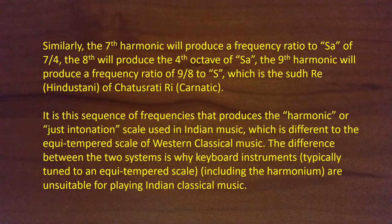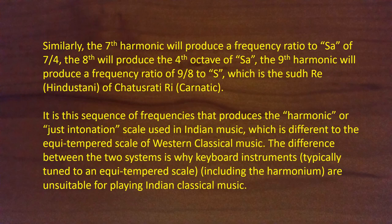Similarly, the seventh harmonic will produce a frequency ratio to Sa of seven over four. The eighth will produce the fourth octave of Sa, and the ninth harmonic will produce a frequency ratio of nine over eight to Sa, which is the Suddha Re in Hindustani style or the Chatushruti Re in the Carnatic style. It is this sequence of frequencies that produces the harmonic or just intonation scale used in Indian music, which is different to the equal temperament scale of Western classical music. The difference between the two systems is why keyboard instruments typically tuned to an equal temperament scale, including the harmonium, are unsuitable for playing Indian classical music.